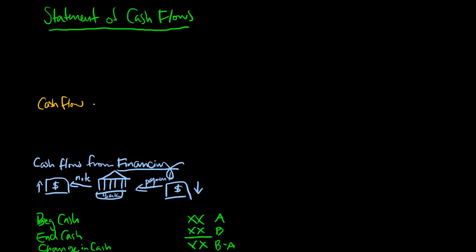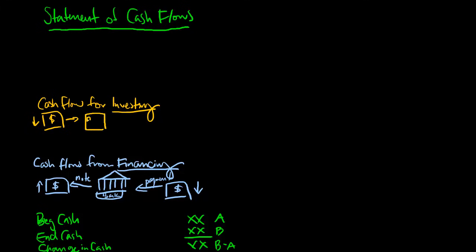Before financing, we have our cash flows used for or provided from investing activities. Investing activities are typically where we take money and invest it into other goods, usually fixed assets like land, buildings, and equipment. Our cash will go down when we purchase fixed assets, construct buildings, or buy equipment. When we sell those buildings, our cash will increase with the amount of money that we're able to collect.